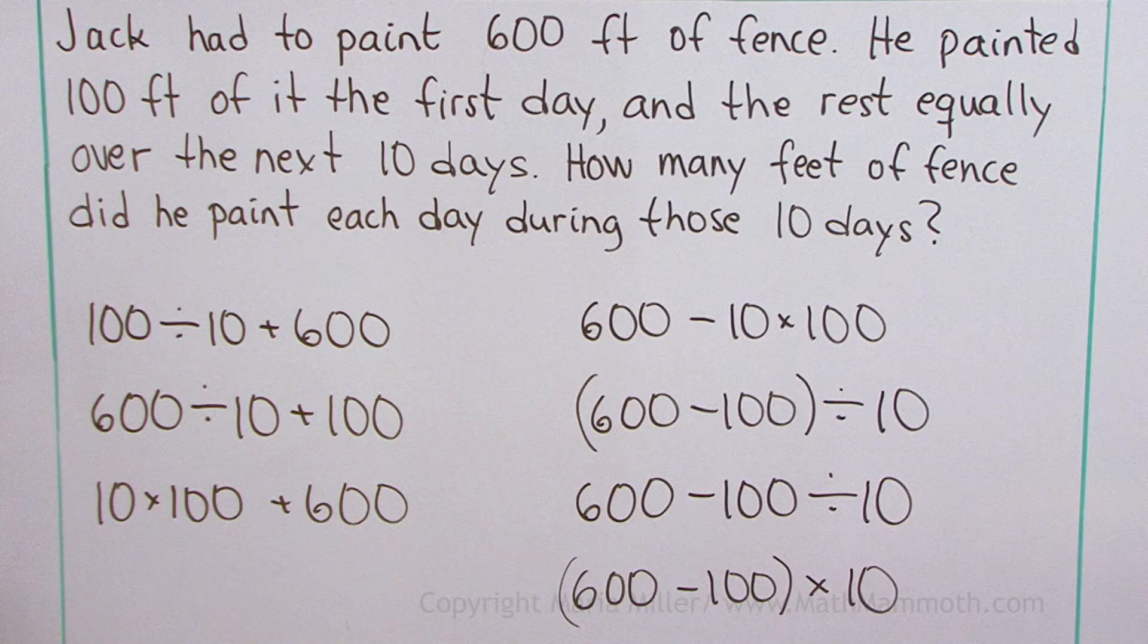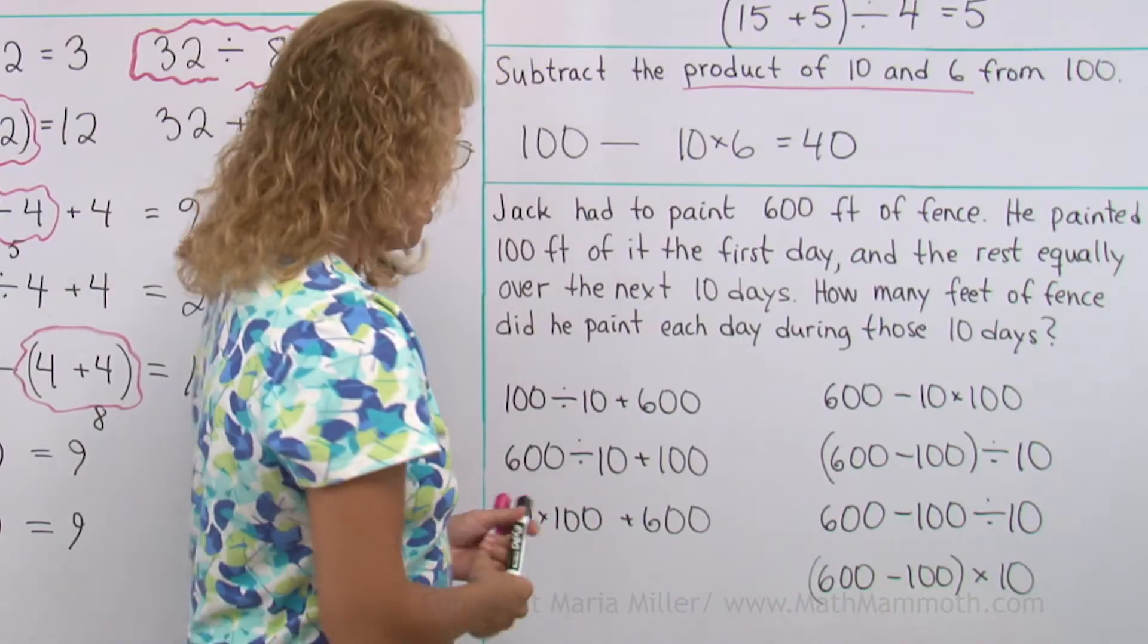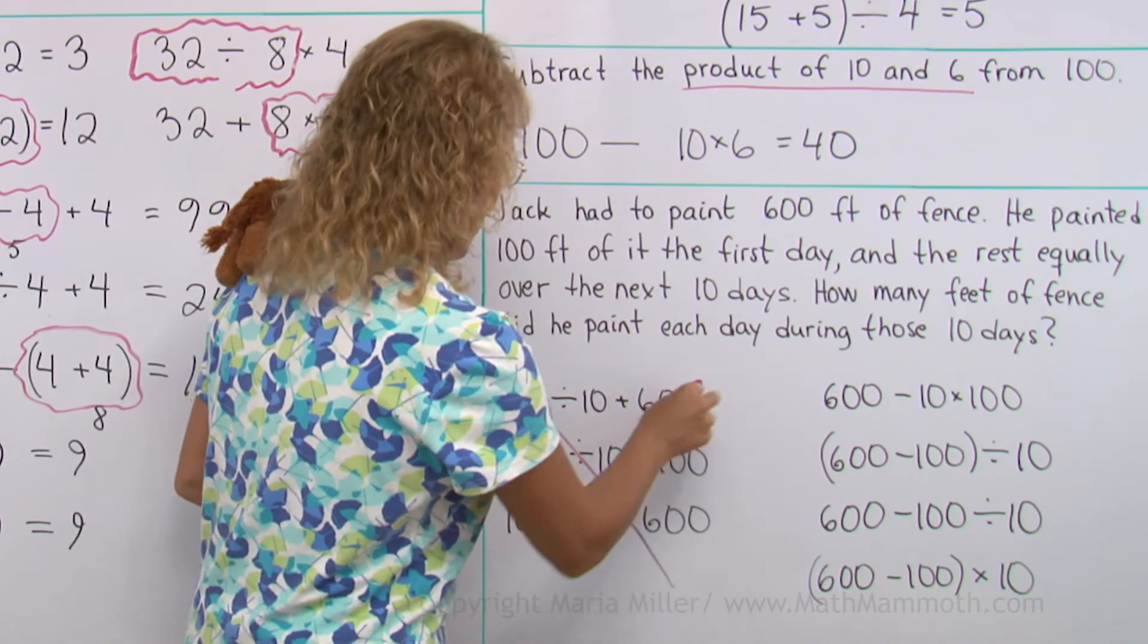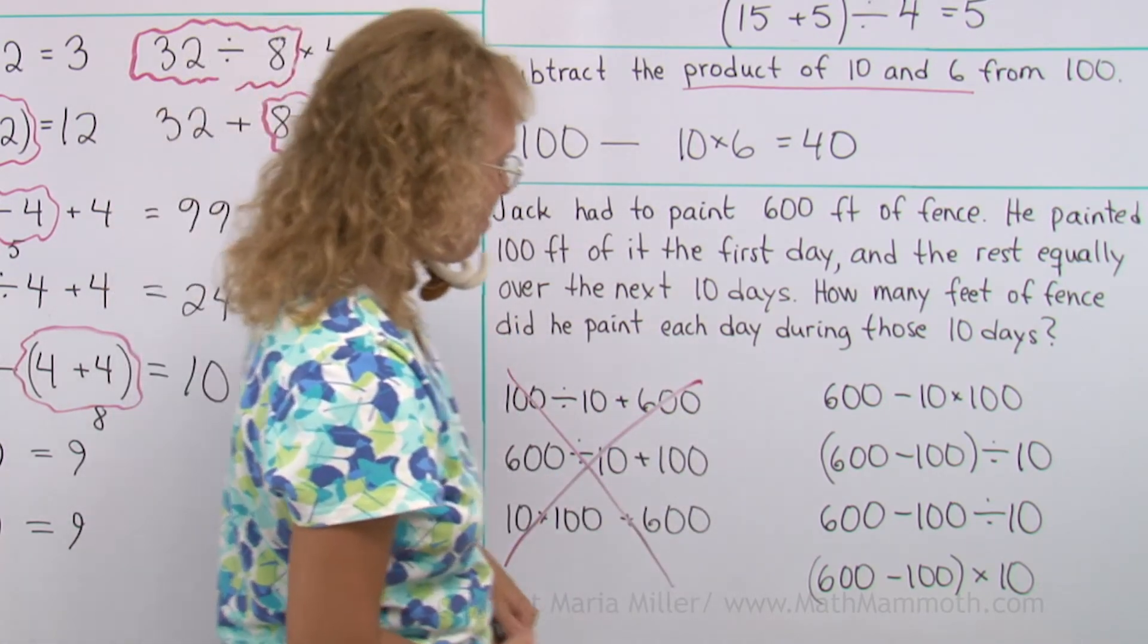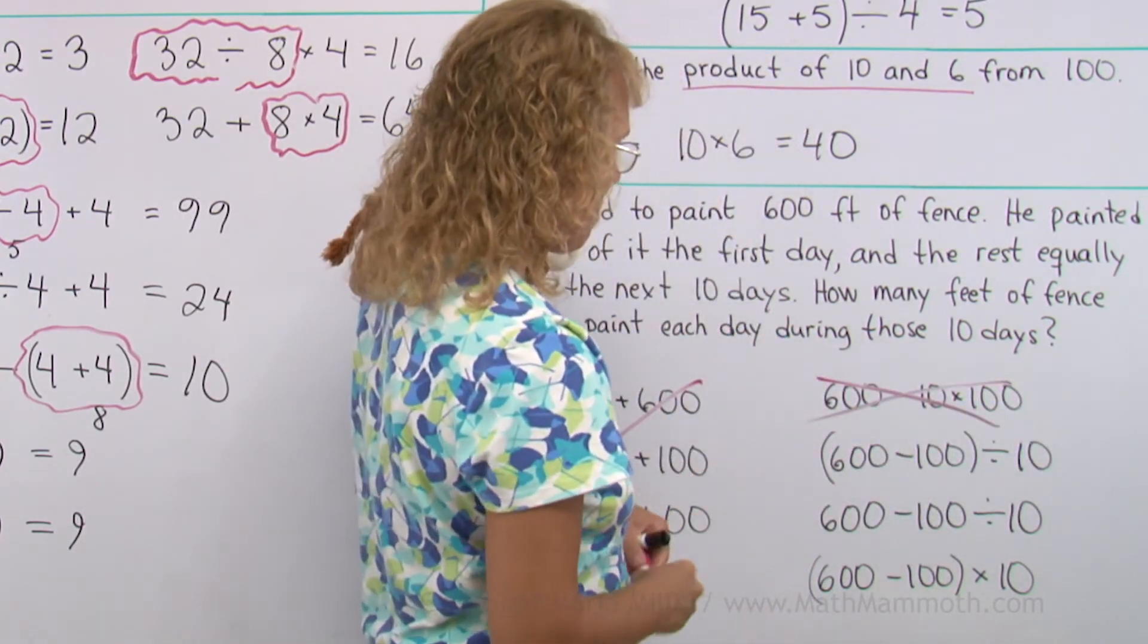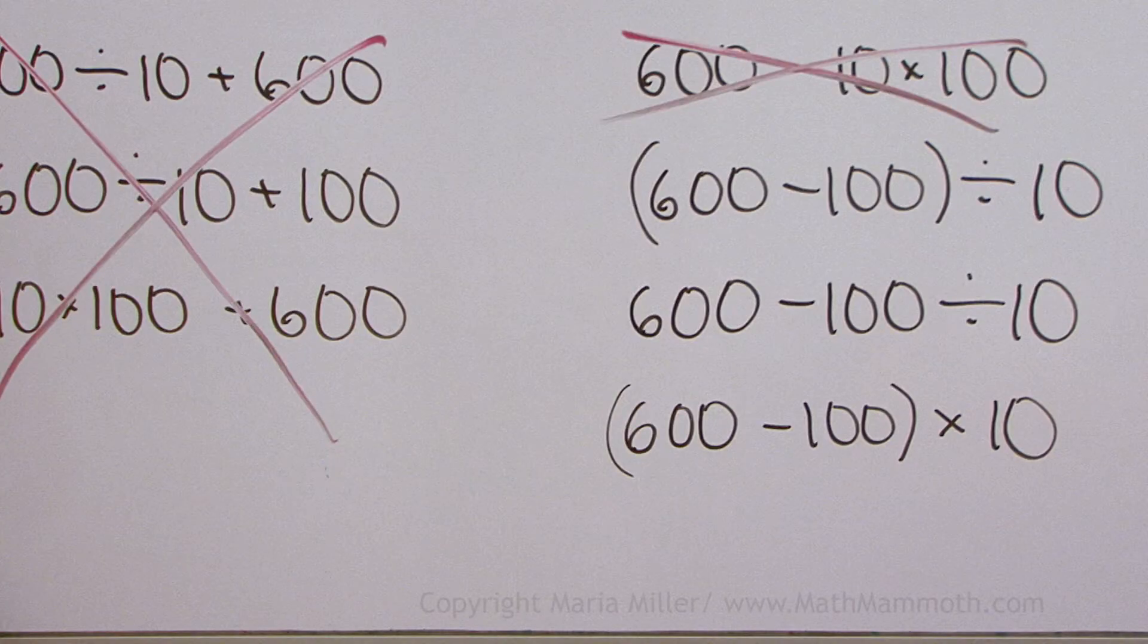Okay. I already told you there's going to be a subtraction, 600 minus 100. So that makes all of these wrong, because there's no subtraction in them. Okay? And this one doesn't have that subtraction either. Can't be right. So we have three more choices.